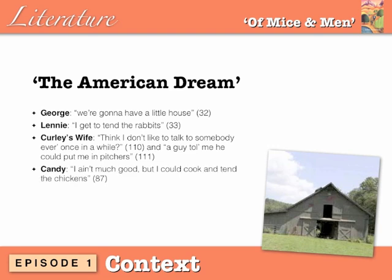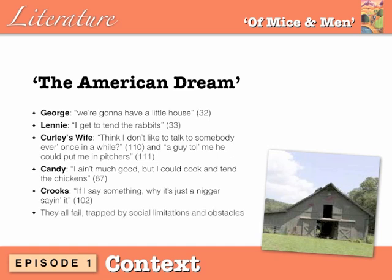Candy's dream is just to be useful again: 'I ain't much good, but I could cook and tend the chickens.' He puts himself down a lot, showing low self-esteem due to his age and missing hand. Crooks dreams of being treated as an equal to white people: 'If I say something, why it's just a nigger saying it.' He wishes for an end to racist attitudes and to be counted as a person rather than segregated. All of these dreams fail because the characters are trapped by social limitations and obstacles they cannot overcome. Steinbeck seems to be saying life was too harsh, and that's just the way it was.